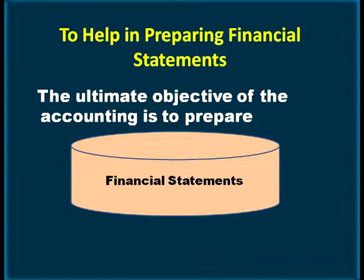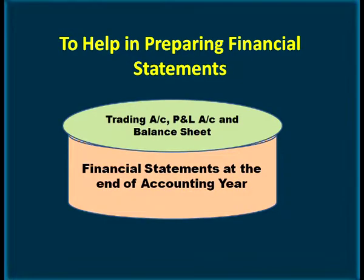As another objective, trial balance helps in preparing financial statements. The ultimate objective of accounting is to prepare financial statements. Why does the organization prepare various journals, ledger, and trial balance? To know the profit or loss, whether the business is making profit or not. The financial statements are: trading account, profit and loss account, and balance sheet. These are prepared by taking the balances from the trial balance.